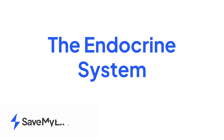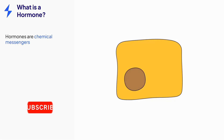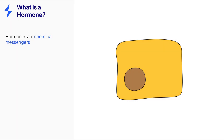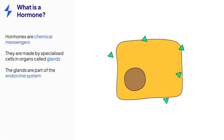This video is on the topic of the endocrine system and hormones. In order to understand the function of the endocrine system, it's important to first understand what a hormone is. A hormone is a chemical messenger, meaning that they send signals around the body in order to bring about a response in a target organ. Hormones are made and released from specialized cells in organs called glands, and these glands make up the endocrine system.